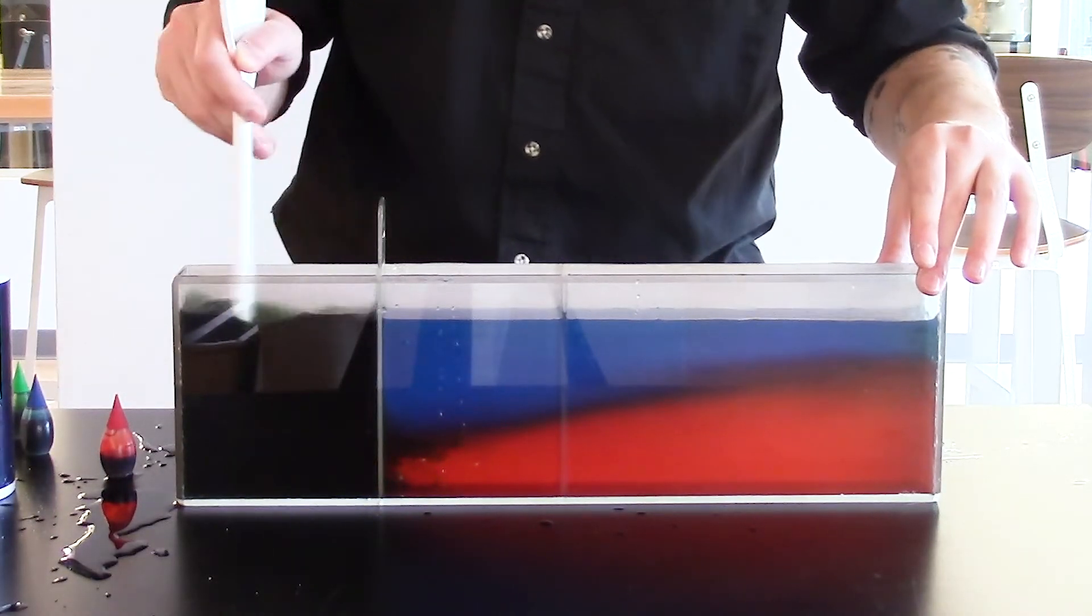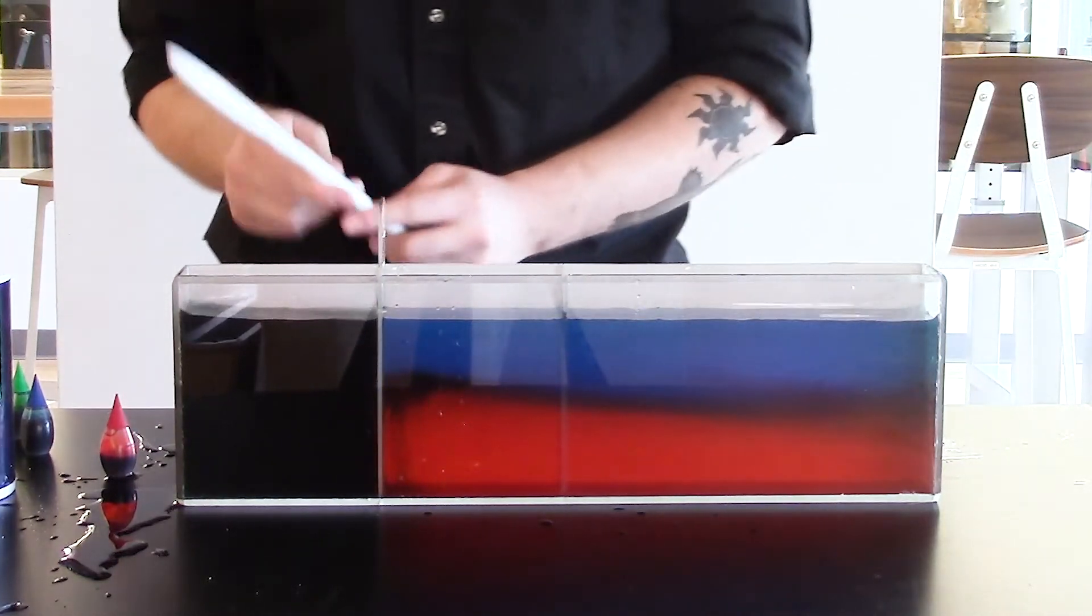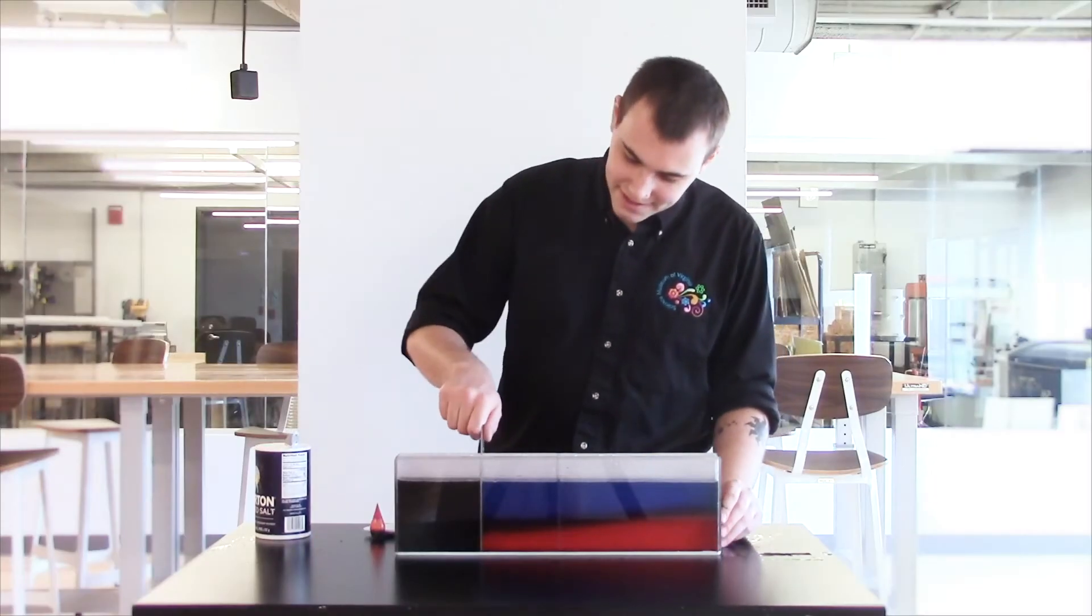So now we have three kinds of water. We have the super salty red, the fresh blue, and the sort of in-between green. Let's find out.